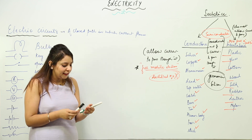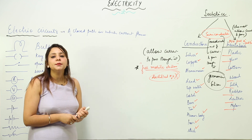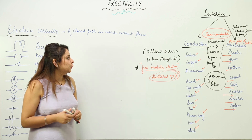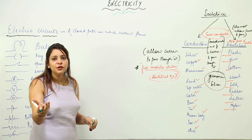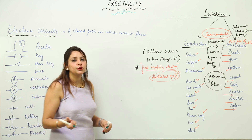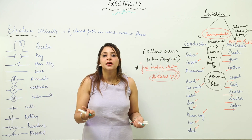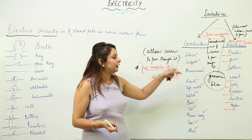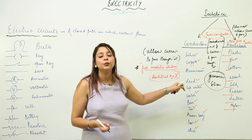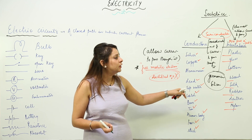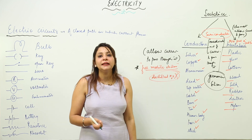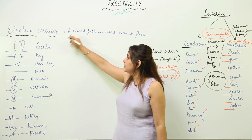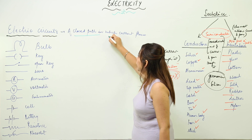Any substance which possesses free mobile electrons is a conductor, and any substance which does not have free mobile electrons is called an insulator. Now, suppose I give you a certain substance and ask you to prove whether it conducts electricity or not — how can you show it? Before we discuss that, we need to take up the topic of electric circuits.